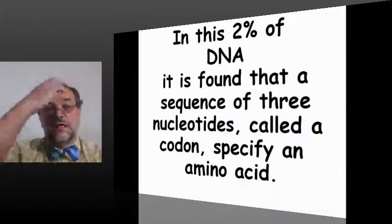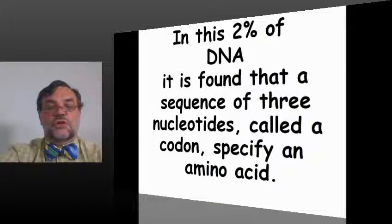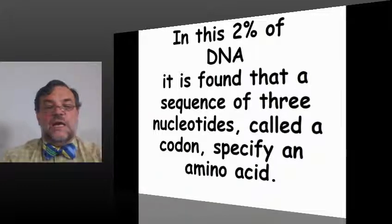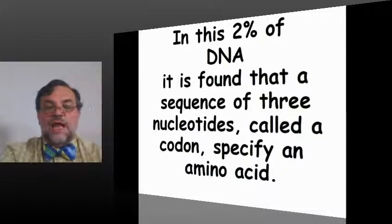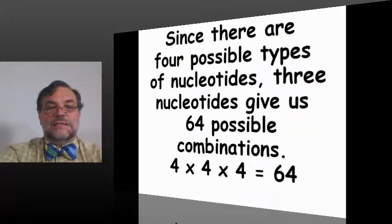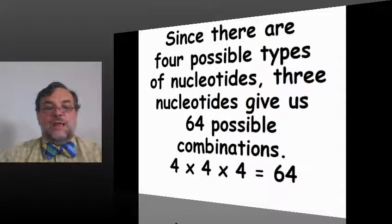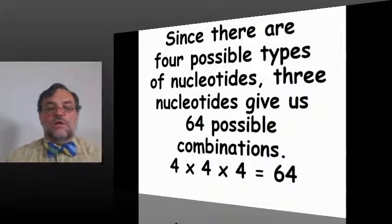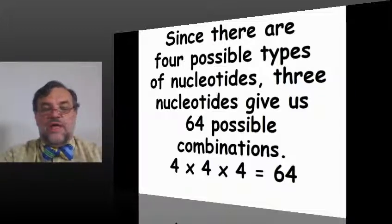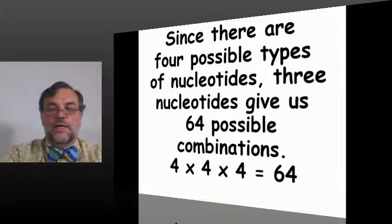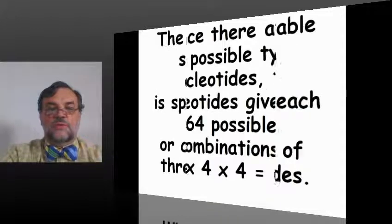In this 2% of DNA, it is found that a sequence of three nucleotides called a codon specify an amino acid. Since there are four possible types of nucleotides, three nucleotides give us 64 possible combinations. The math on that is real simple: four times four times four equals 64 possible combinations.